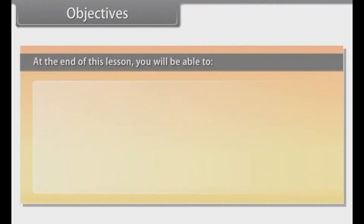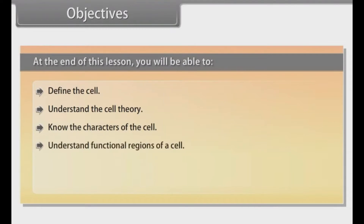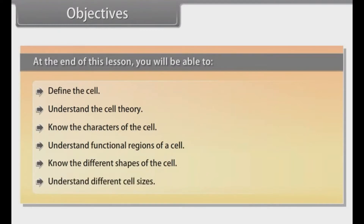Objectives. At the end of this lesson, you will be able to: define the cell, understand the cell theory, know the characters of the cell, understand functional regions of a cell, know the different shapes of the cell, and understand different cell sizes.